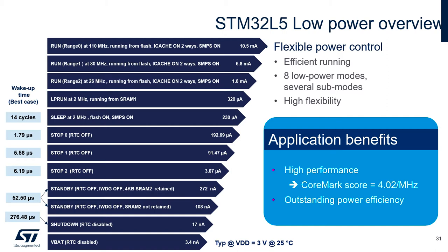Then we have three stop modes. In these modes, both core and peripherals are stopped. These are typical low-power modes where the MCU is waiting for an interrupt to wake up and resume the application. Depending on the type of stop mode, the consumption, wake-up time, and number of wake-up sources are all different.